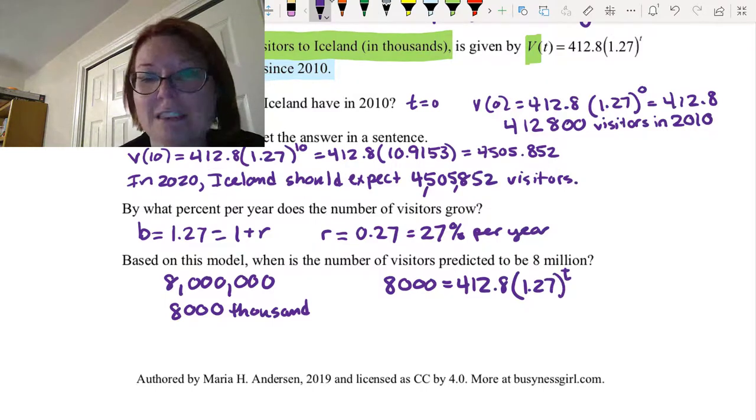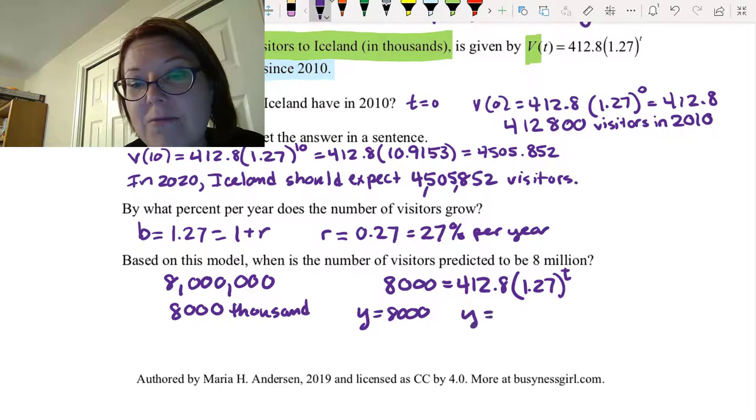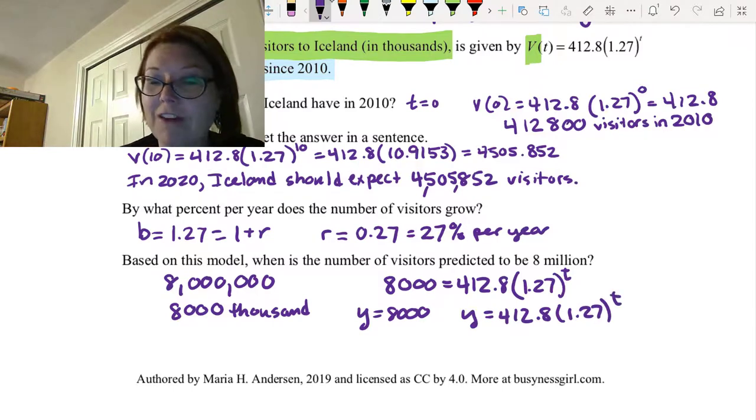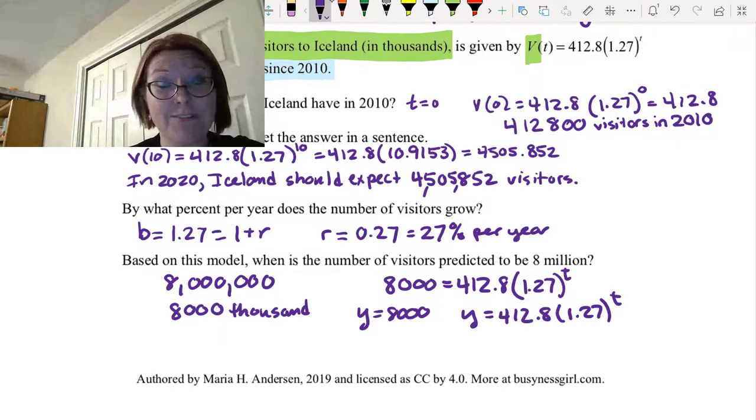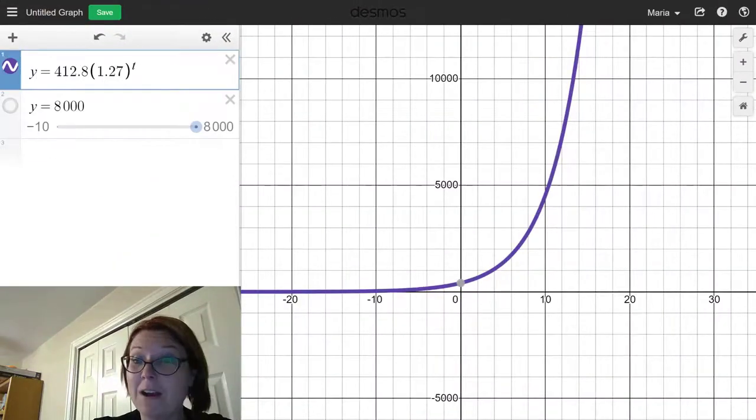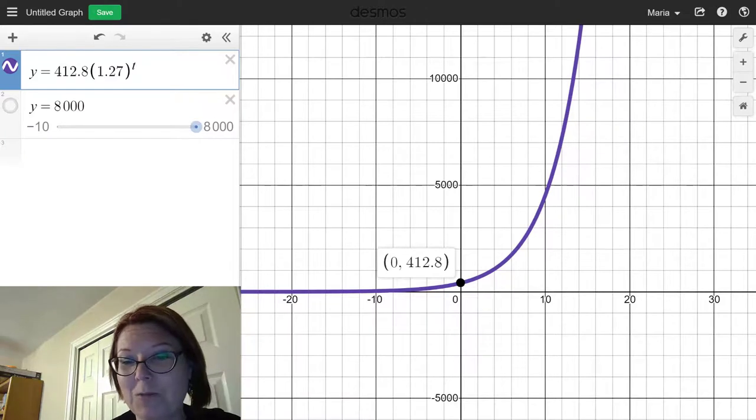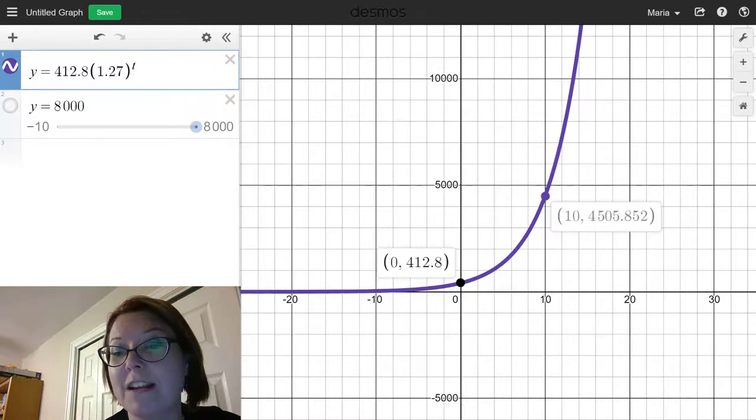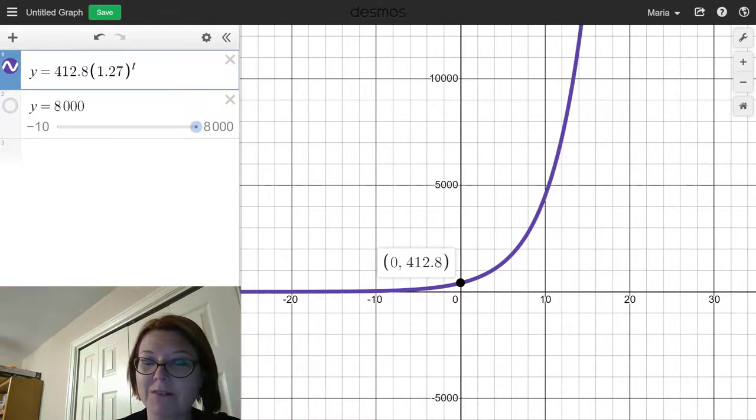And we could graph the right side, y = 412.8 times 1.27 to the t. And if we graph both sides, all we need to do is look for the intersection point, right? We can always use this as a method of solving an equation. So let's go to a graph. I've got the graph of y = 412.8 times 1.27 to the t. See, it's increasing very rapidly. Going through the points that we talked about, which would be (0, 412.8). And we looked at the value at 10, which is 4505.85. So you can get a sense for how fast the graph is growing.